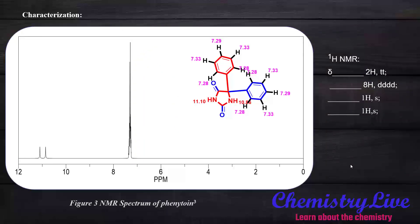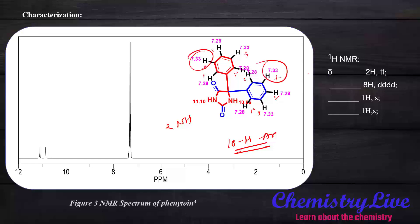The NMR spectrum is very useful to identify our synthesized phenytoin compound. The total number of protons: there are 10 aromatic protons on the two phenyl rings, plus two N-H protons, giving 12 protons total. The two protons at δ 7.33 appear as a triplet of triplets. The eight aromatic protons in the range δ 7.28–7.29 show a doublet of doublet of doublet pattern.